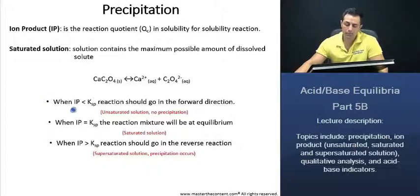Three different conditions that we should be aware of as we move forward: when the ion product constant is actually going to be less than the solubility product, the reaction should go in the forward direction. So that means the solution is unsaturated, and there's going to be no precipitation forming. When the ion product is equal to our solubility product, the reaction mixture will be at equilibrium and the solution will be saturated. And lastly, when the ion product is actually larger than the solubility product constant, the reaction should go in the reverse direction, and the solution is going to be supersaturated, and a precipitation will occur.